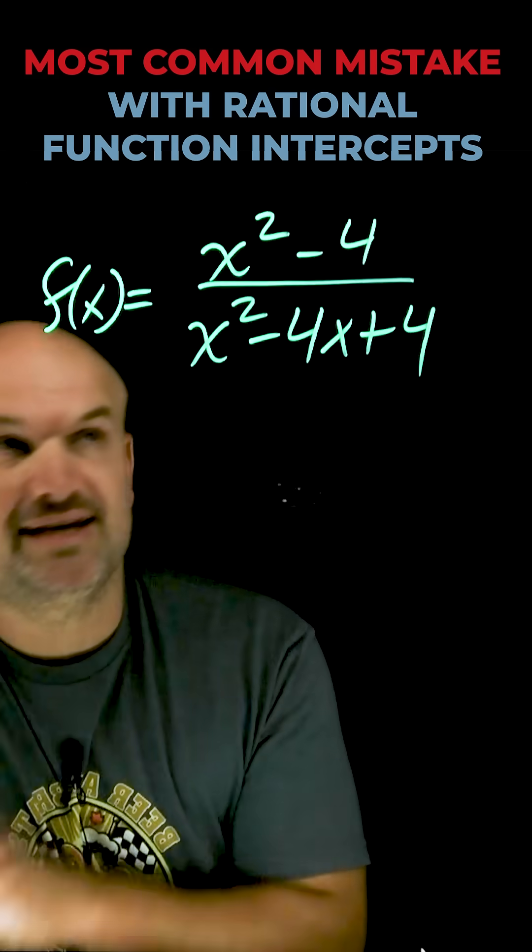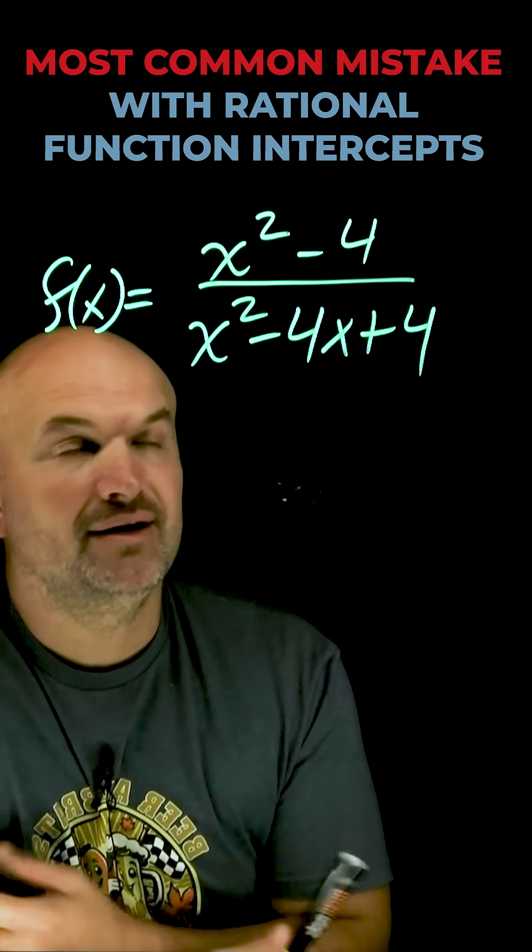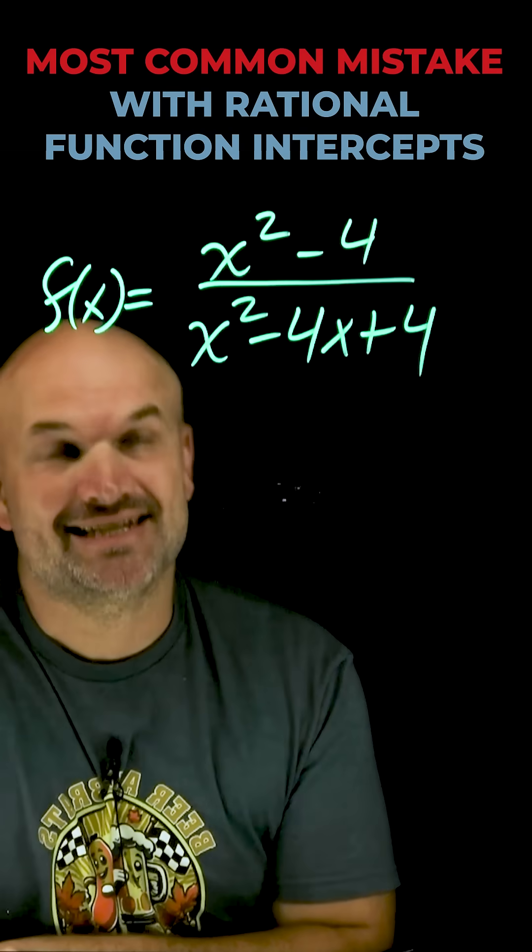Let's talk about the worst mistake that students make when identifying the x and y intercepts of a rational function. It simply is not simplifying and putting an x and y intercept at a discontinuity.